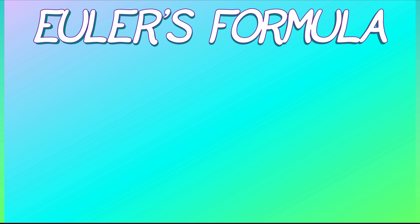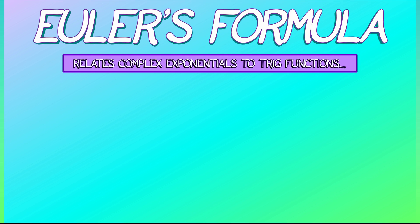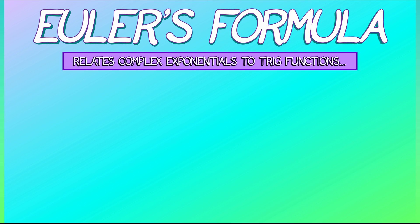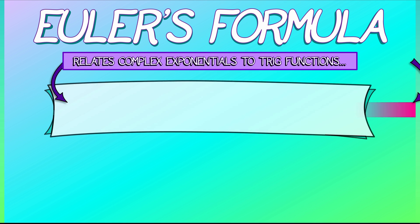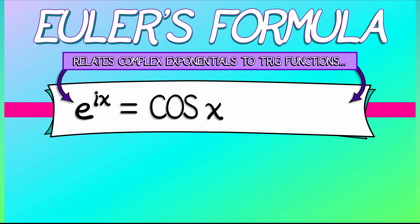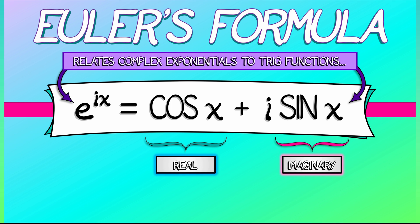Euler's formula relates the complex exponential to the basic trig functions in the following form: e^(ix) equals cos(x) plus i times sin(x). So on the right-hand side, we have a complex function. The real component is cos(x), the imaginary component is sin(x).